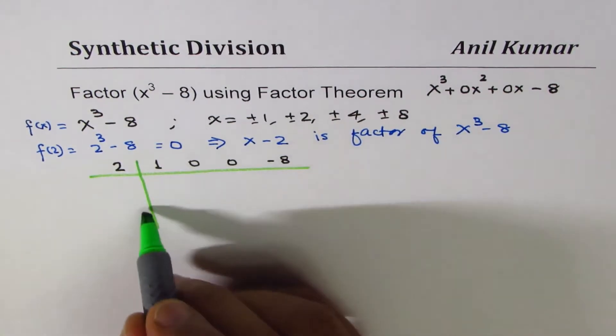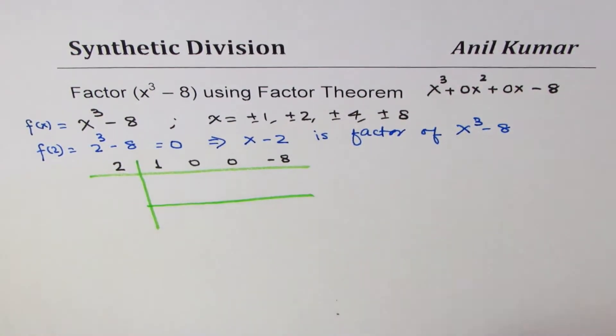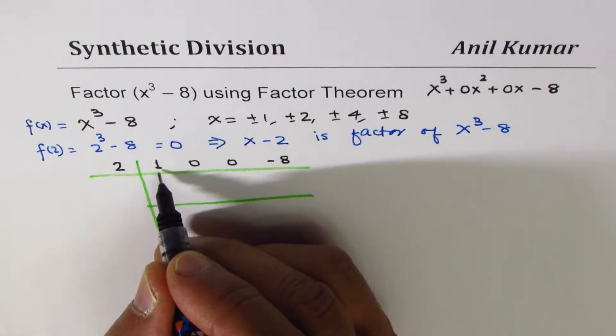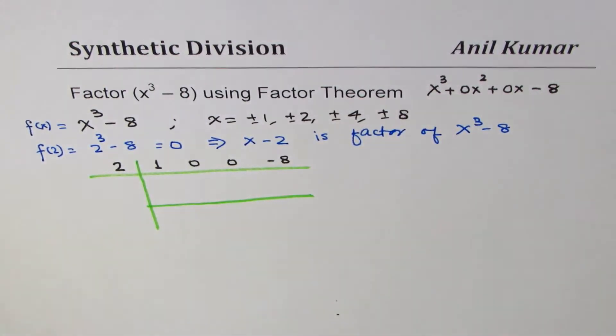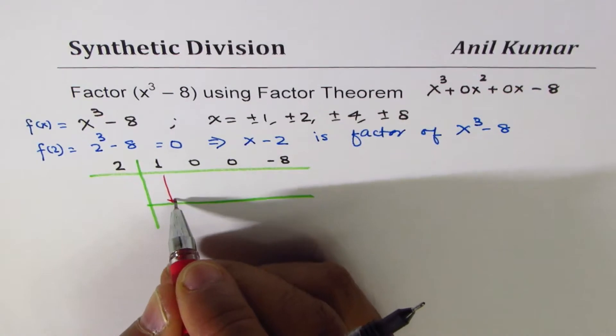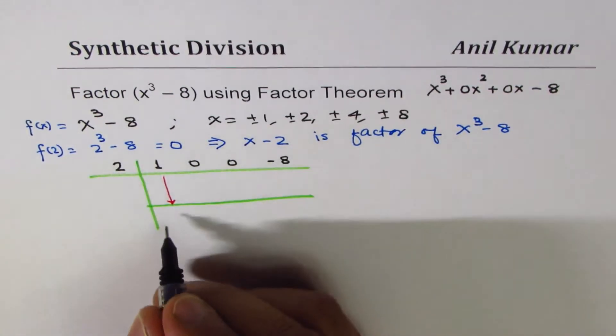The steps involved are, we'll bring down the first term, which is 1. Let me use another ink. We'll bring it down here straight. So we get 1 here.